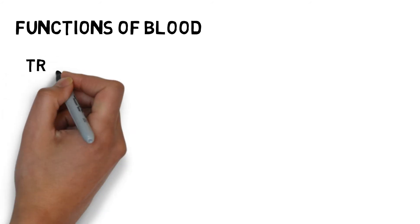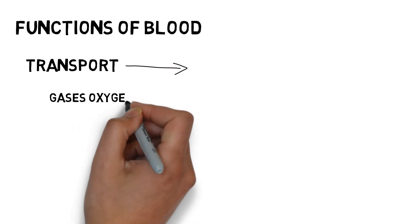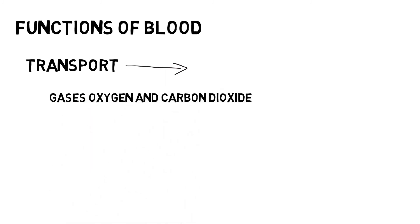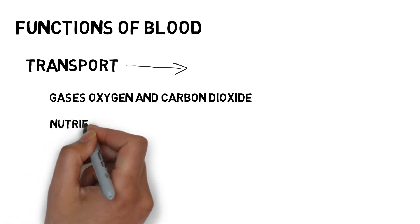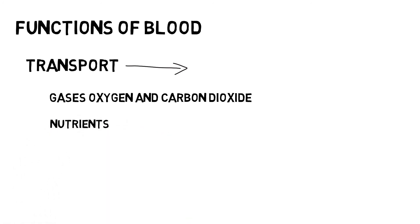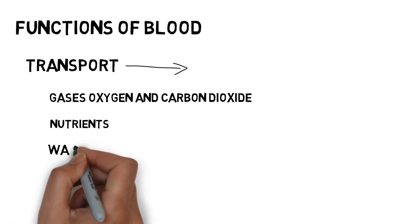Blood plays a vital role in transport, protection, and regulatory functions of the body. In its transport function, blood transports respiratory gases — oxygen from the alveoli of lungs to different tissues, and carbon dioxide from tissues back to the alveoli. It also transports nutritive substances like glucose, amino acids, lipids, and vitamins derived from digested food, absorbed from the gastrointestinal tract, and carried to different parts of the body.